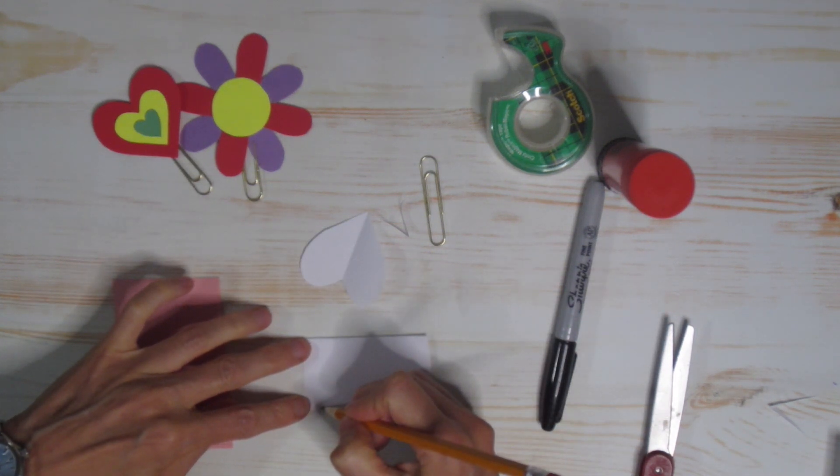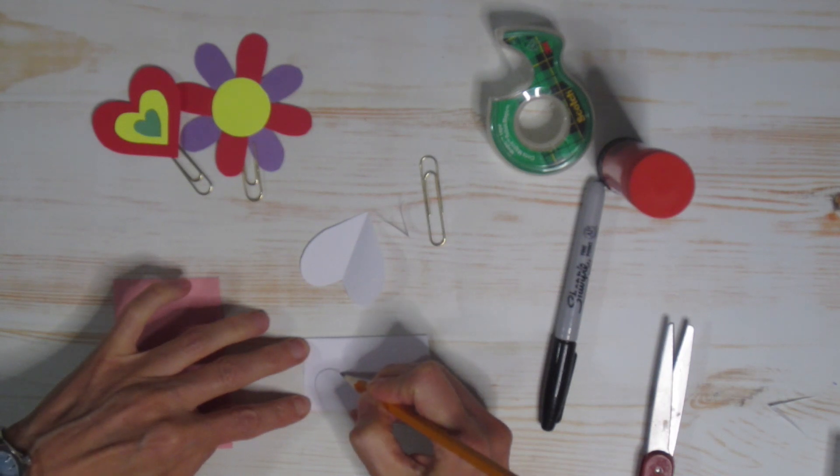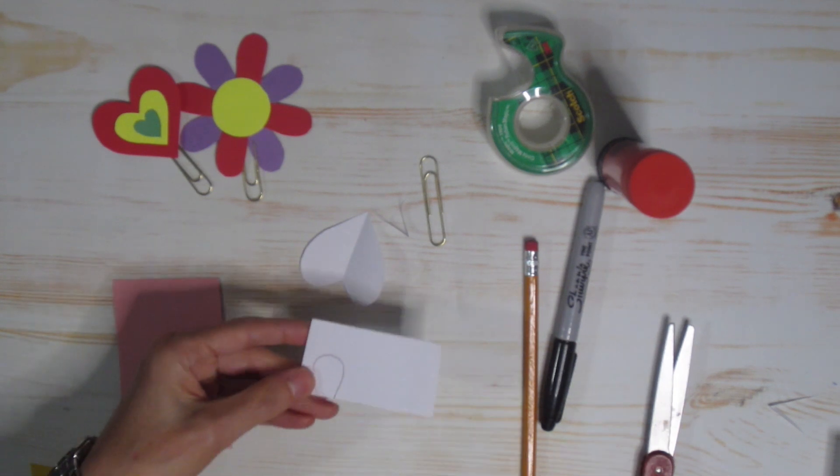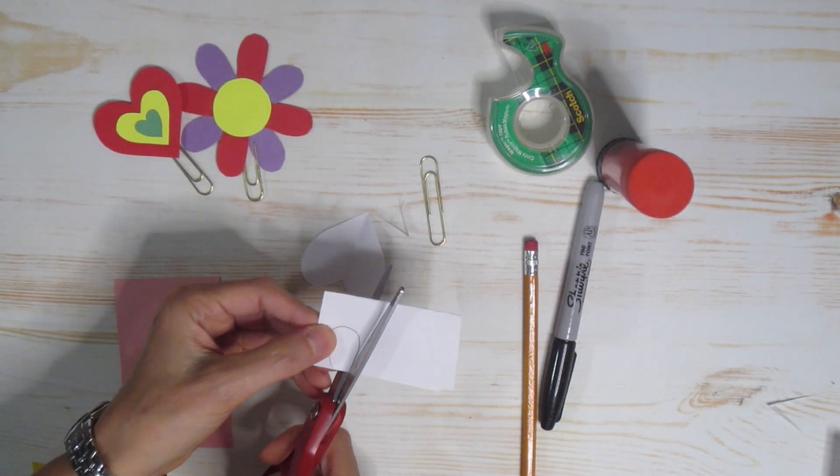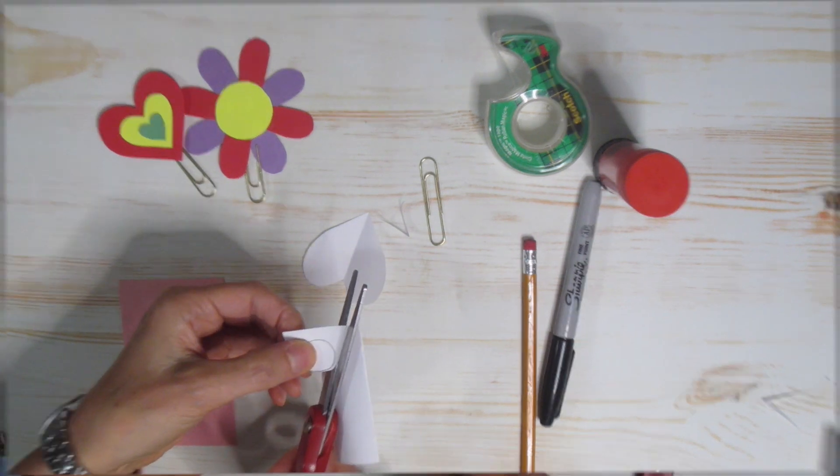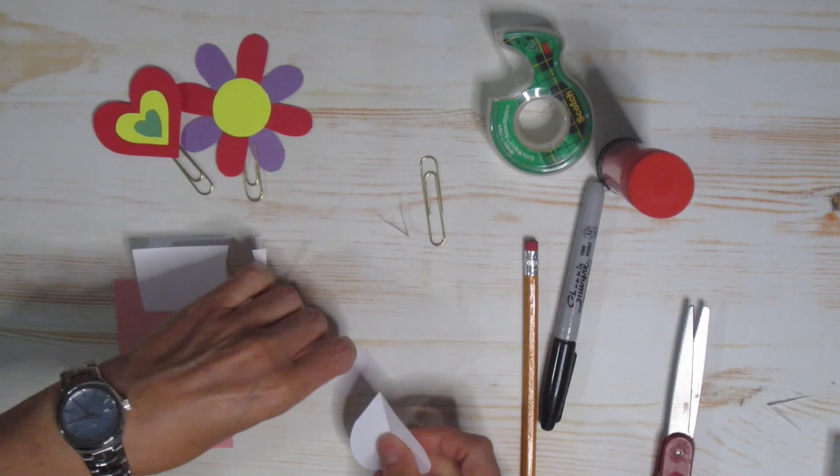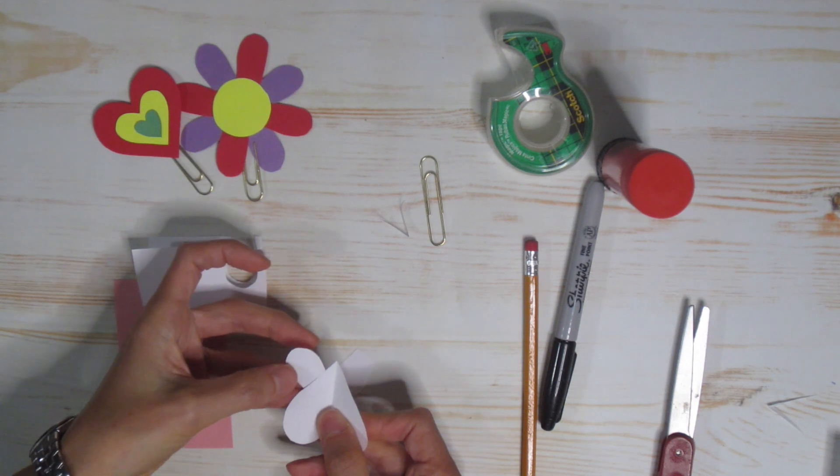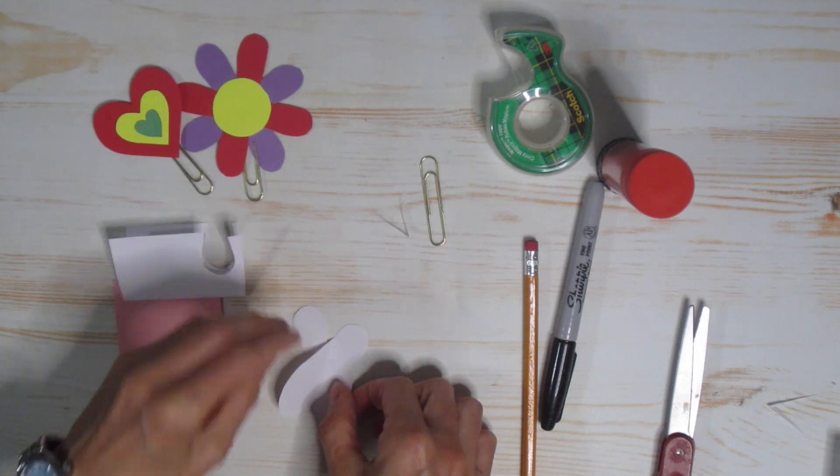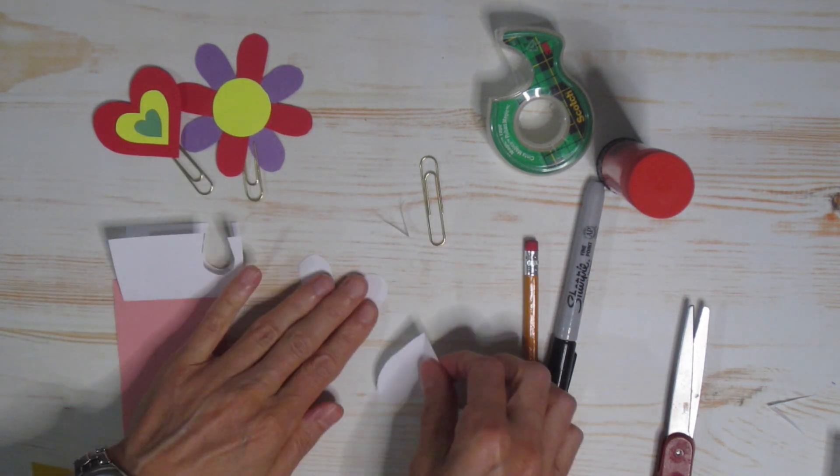And I am just going to start at the bottom, come up, go around, and back down. And that's going to be my ear. And then I'm just going to cut that out. I'm just going to put those on there, see if I like the ears before I glue them. Yep. So those are ready.